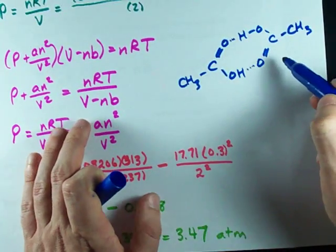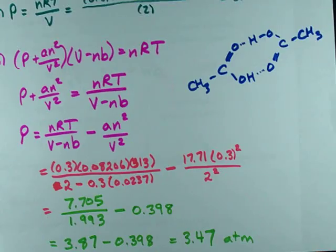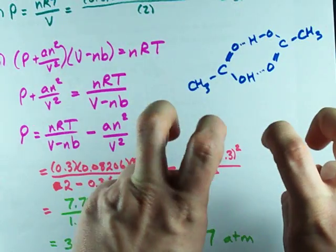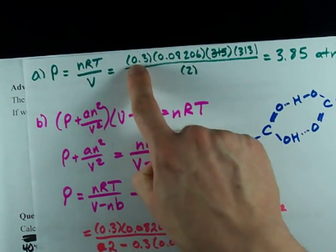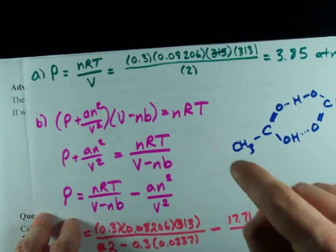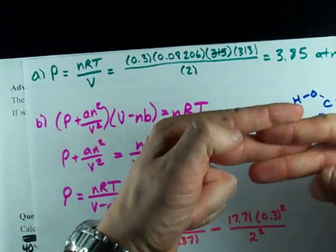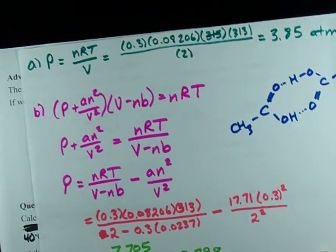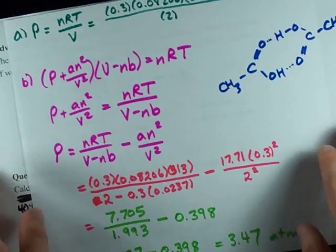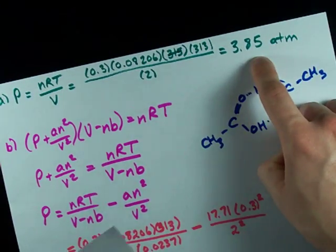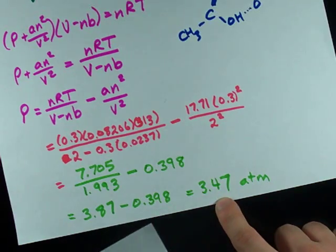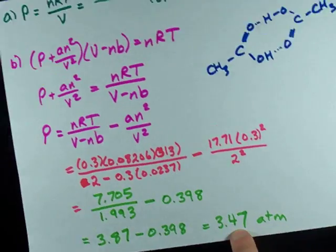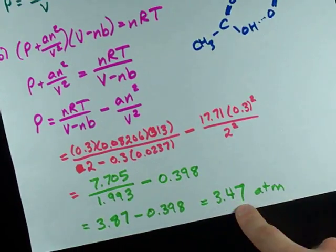It's called a dimer because there are two of them. And the fact that these molecules are sticking together more means essentially we have a lower N than we actually think. We may have put 0.3 moles of stuff in, but because some of them have paired up, we really only have like 0.28 moles of stuff or particles. In any case, all I'm trying to get across to you is that the ideal gas equation gives one pressure and the Van der Waals equation gives another pressure. And they're different because in the real world, most molecules have intermolecular forces and some volume.